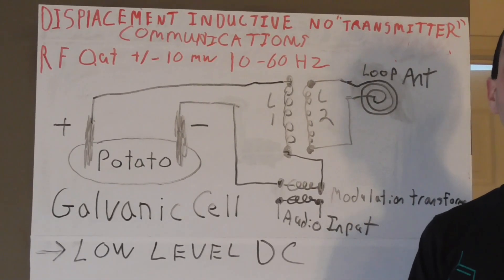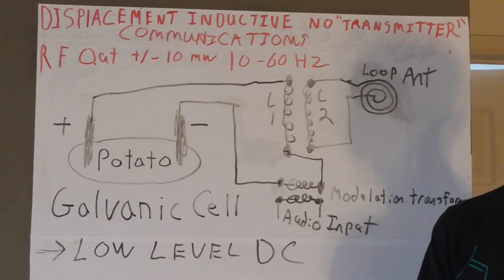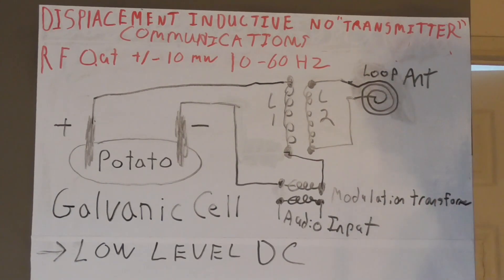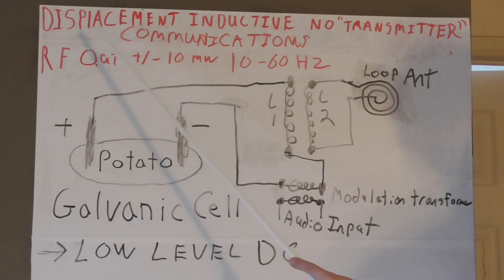Good day folks, I'd like to show you a method to create RF without using a traditional transmitter, and I call this the displacement inductive no transmission communication method. Basically, the way this works is we use a galvanic cell here.